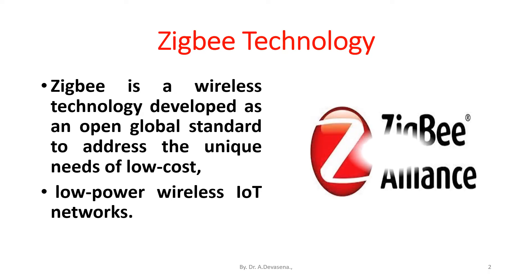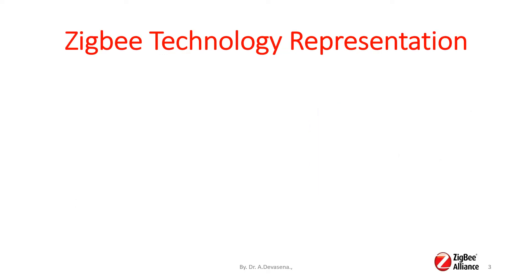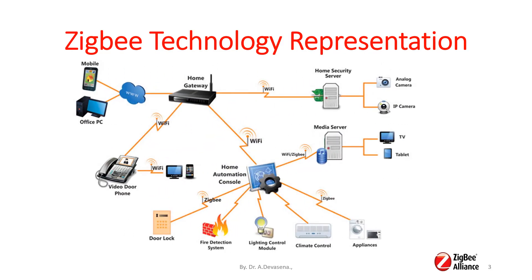Here is a representation of the Zigbee symbol and technology. In this diagram, we are having a home gateway. The home gateway is connected to the internet. From the home gateway, with the help of wireless fidelity technology, components like video to home, home automation console, and home security server are being connected.